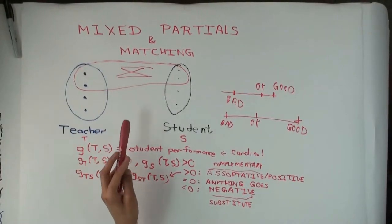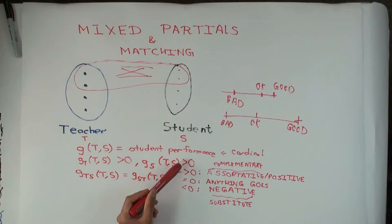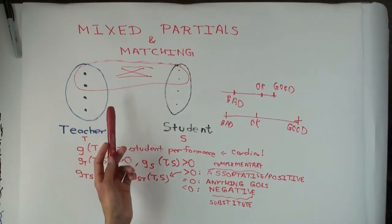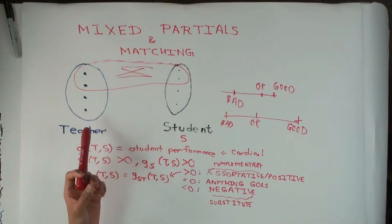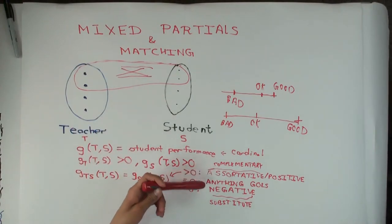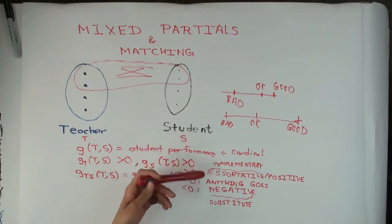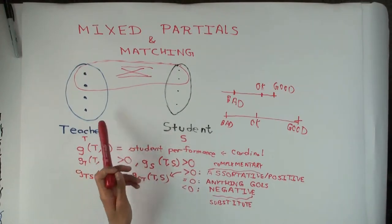This is a continuation of the previous video. I want to elaborate on an aspect I didn't touch on in the last video: how do you actually expect people to sort and match each other, like teachers and students, in the real world?